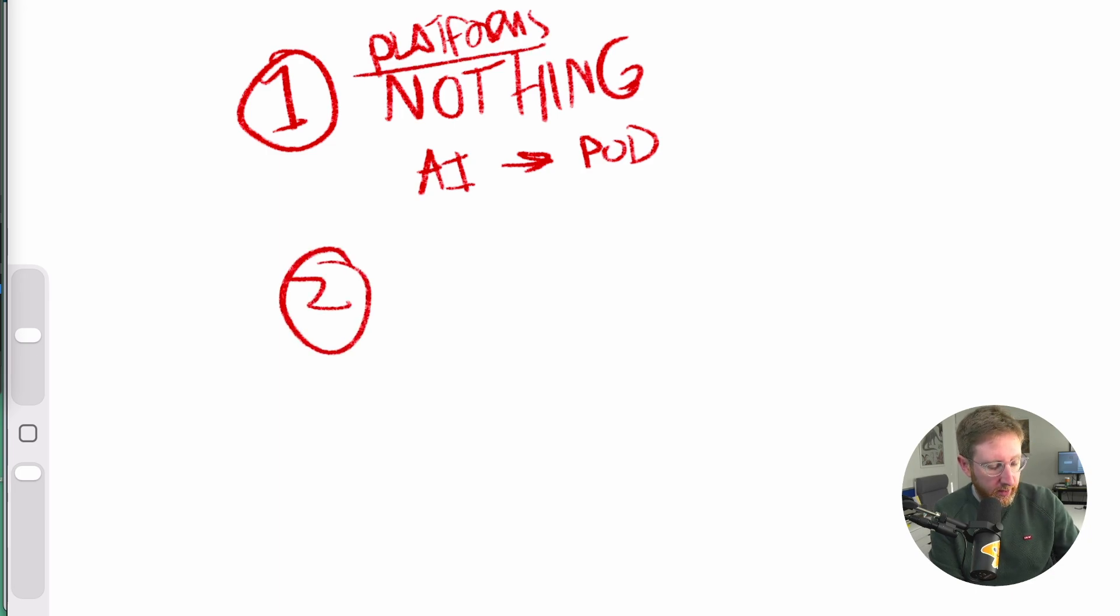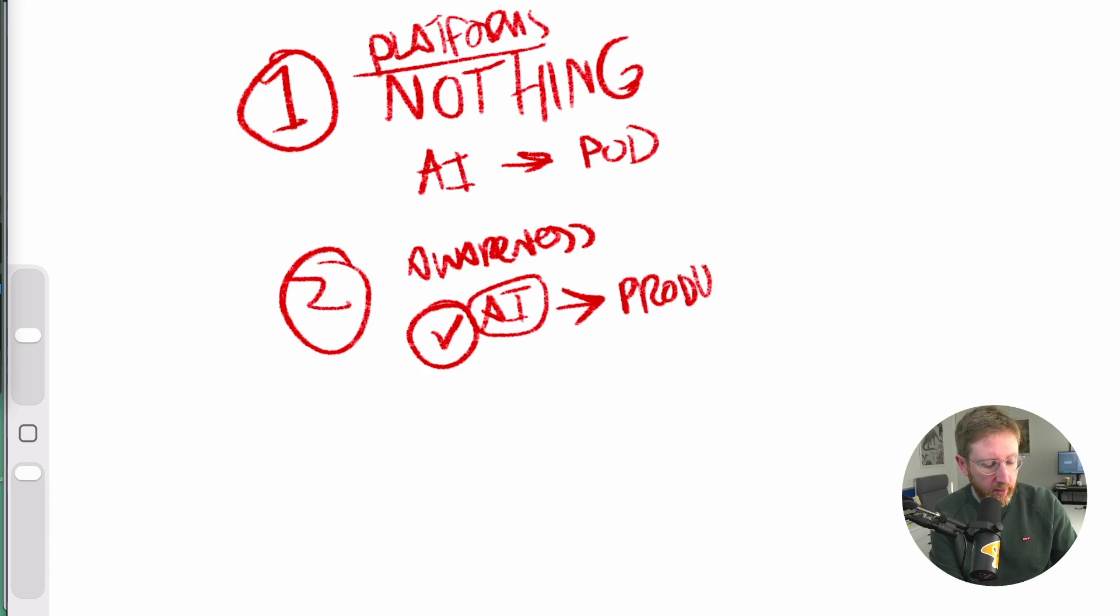Option two would be something kind of like a midpoint where there's some kind of awareness of it, like, you know, a little logo that says this is AI generated, maybe appears on certain products. And that would be, obviously, that would be just kind of like openness on behalf of the platforms.